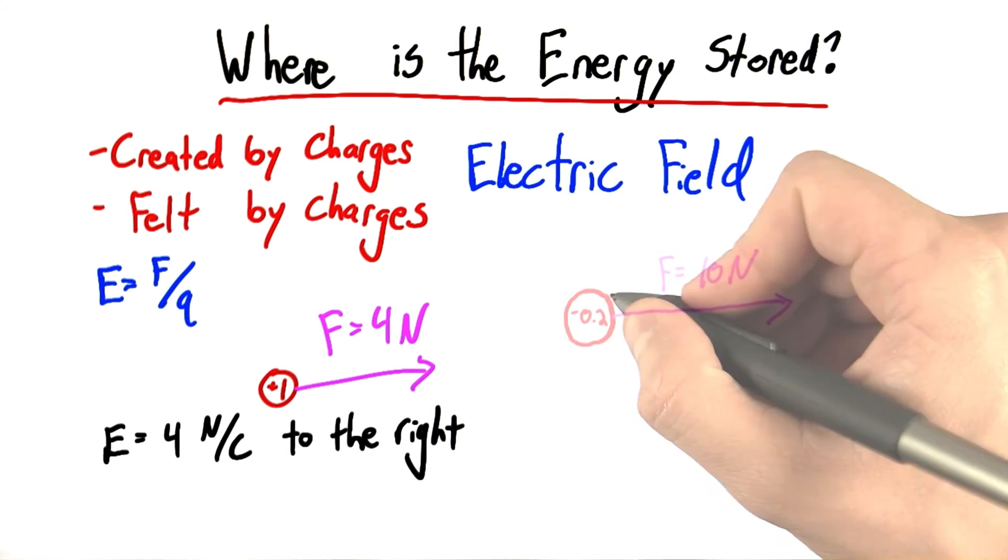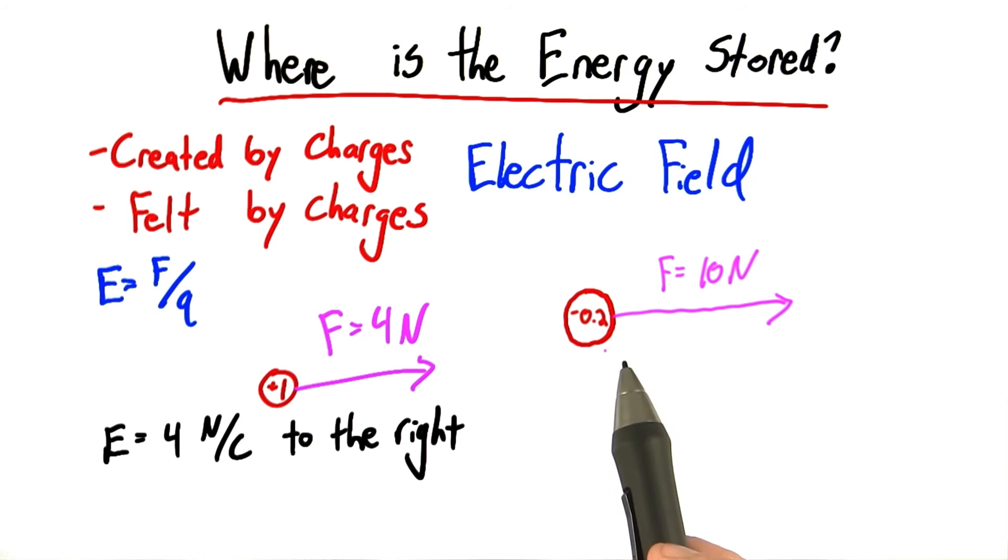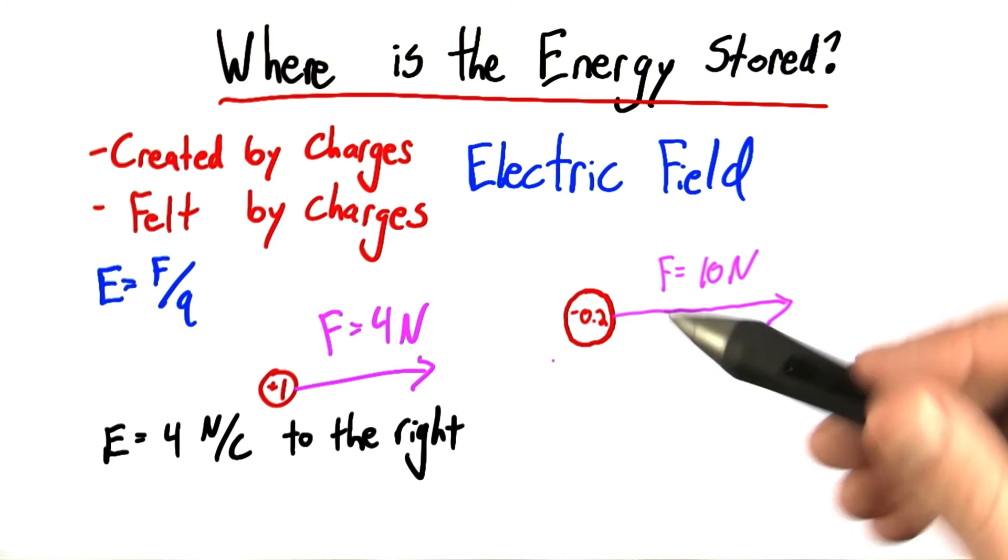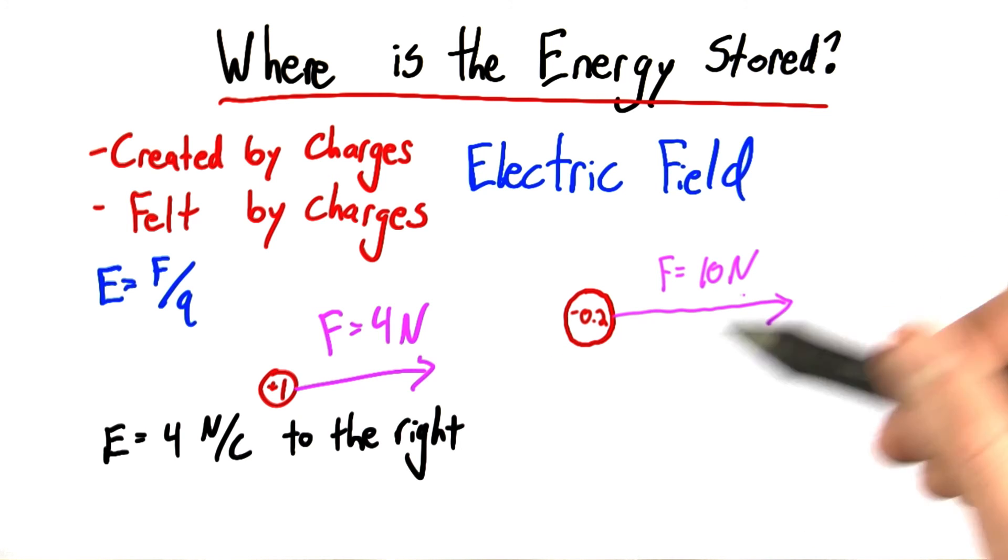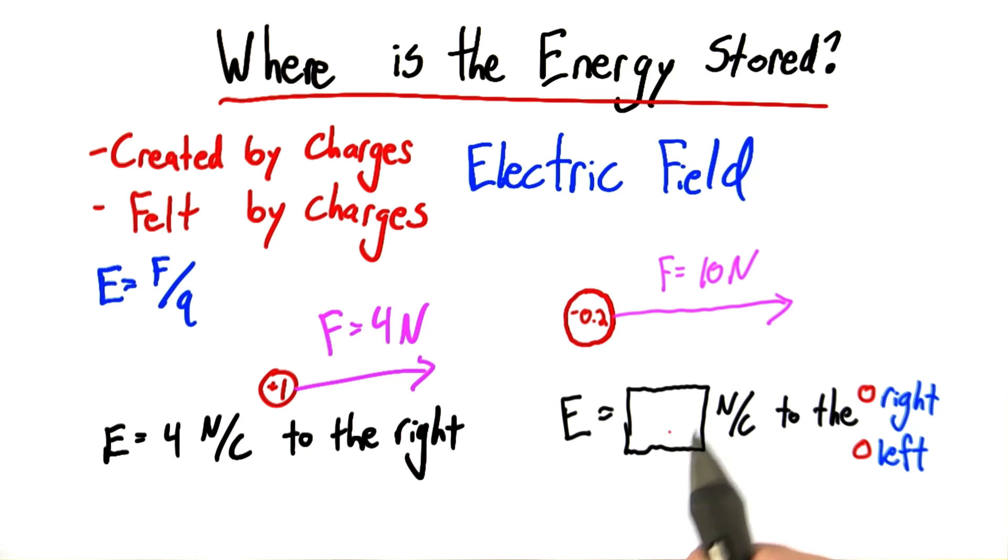Now, what if I gave you a different problem? Let's say I have a negative charge that, when placed in a certain electric field, feels a force of 10 Newtons to the right. Can you fill this out for me? Can you tell me what the strength of the electric field is? And that strength should be a positive number. And can you tell me whether it's an electric field to the right or to the left?